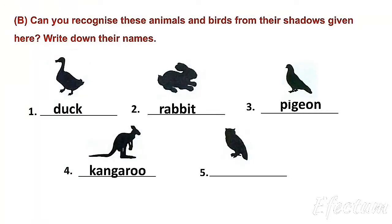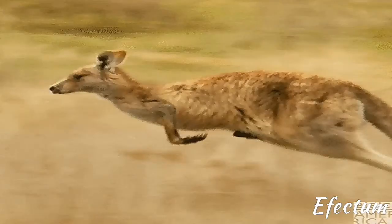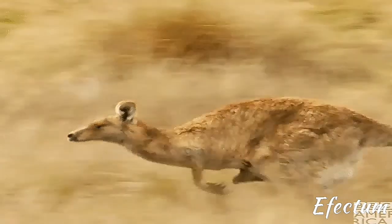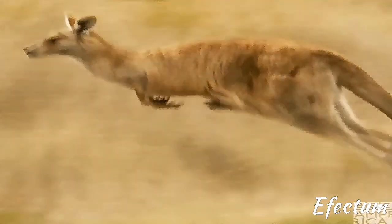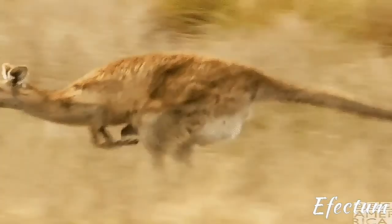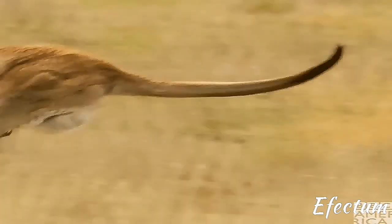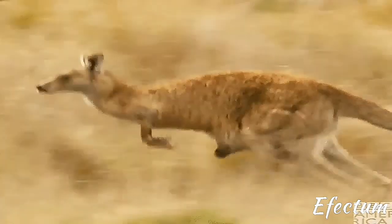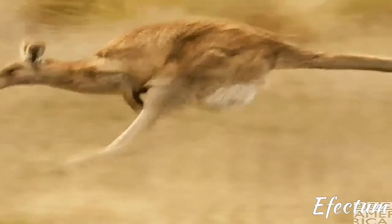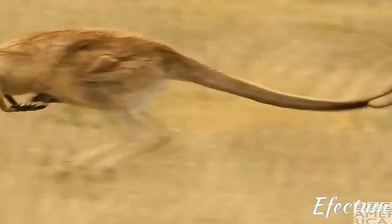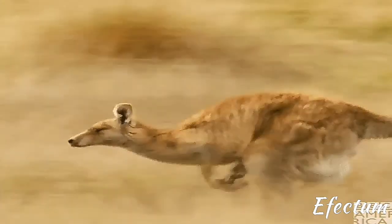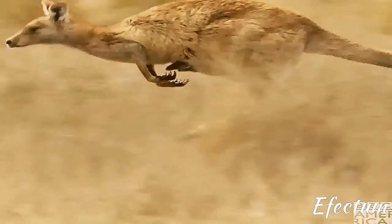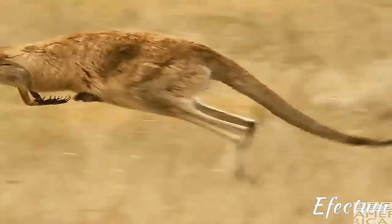Number 4 — kangaroo. Kangaroos are wild animals. They move from place to place by jumping. They have short front legs and powerful long back legs. They have a strong long tail.